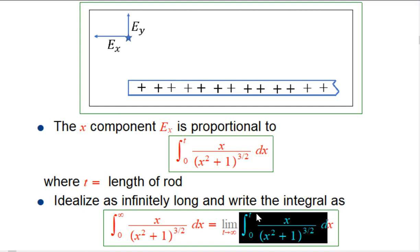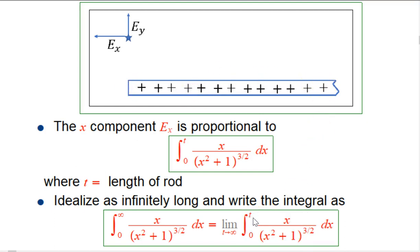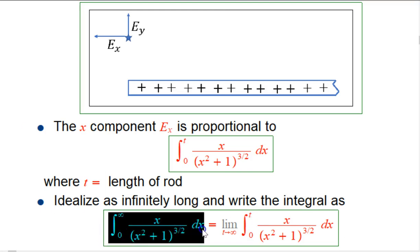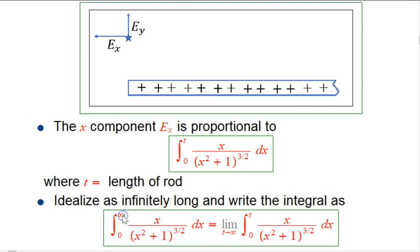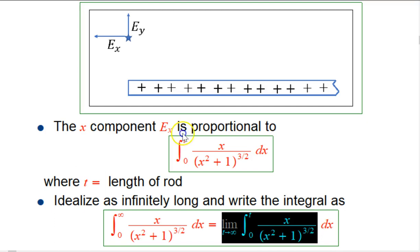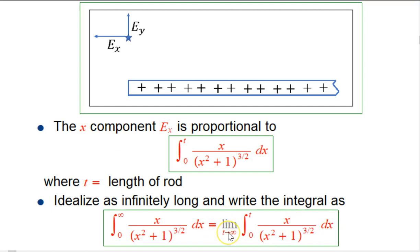That's exactly the limit as t goes to infinity of the integral from 0 to t. You take the meaningful expression, the integral over a finite interval using a finite rod, but then you just see what the trend is when that rod gets longer and longer. So this is our first example of an improper integral. They get written in this way with a symbolism of infinity in the limit.